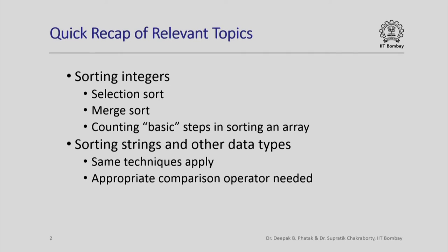Here is a quick recap of some of the relevant topics we have already studied. We have looked at how to sort an array of integers, specifically selection sort and merge sort, and we have also seen how to count the number of basic steps using any of these techniques when sorting an array. We have also seen how to sort arrays of strings and other data types, and basically the same techniques as used for sorting integers apply — it is just that we have to use an appropriate comparison operator.